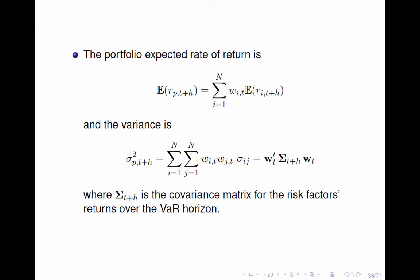Let sigma i and j be the covariance of the risk factors i and j. Then the variance of the portfolio rate of return is given by the following sum.